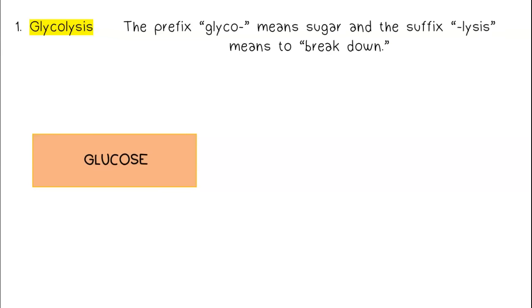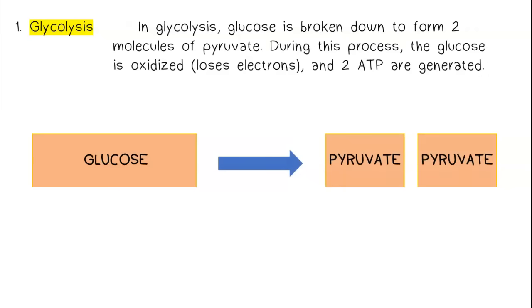The prefix glyco means sugar, and the suffix lysis means to break down. In glycolysis, glucose is broken down to form two molecules of pyruvate. During this process, the glucose is oxidized, or loses electrons, and two ATP are generated.